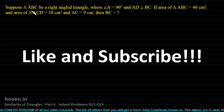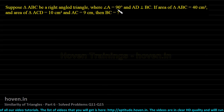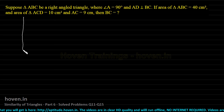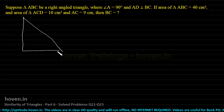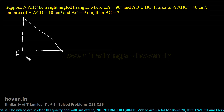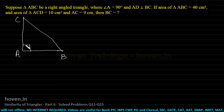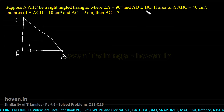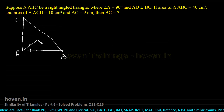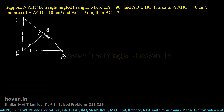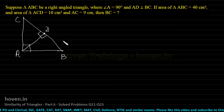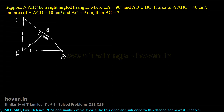Suppose triangle ABC is a right-angled triangle where angle A is 90 degrees and AD is perpendicular to BC. Let us first draw a diagram. This is our right-angled triangle at A, and AD is perpendicular to BC — this side is BC and AD perpendicular is marked with point D. This triangle with this perpendicular is a set of three similar triangles, as done in our previous videos.